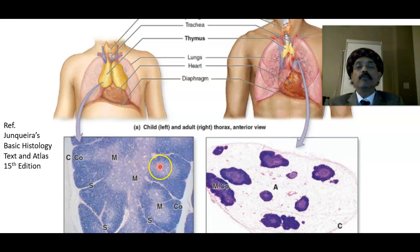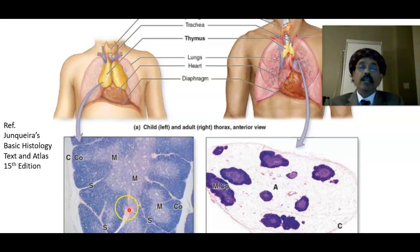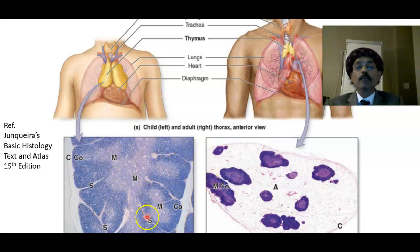The medulla is continuous — one medulla is continuous with another medulla. The thymus is covered by a capsule, and from the capsule it gets the trabeculae that extend inside the thymus, dividing it into multiple incomplete lobules.